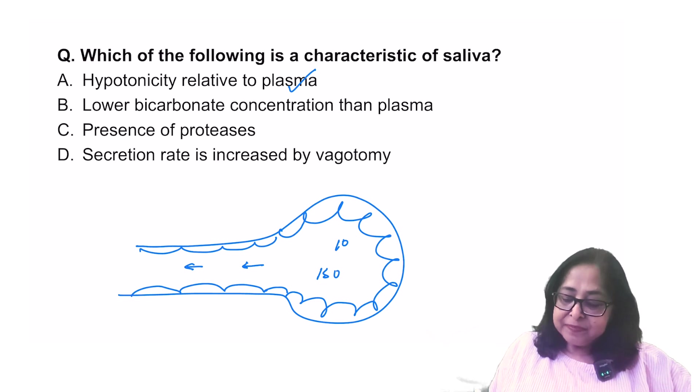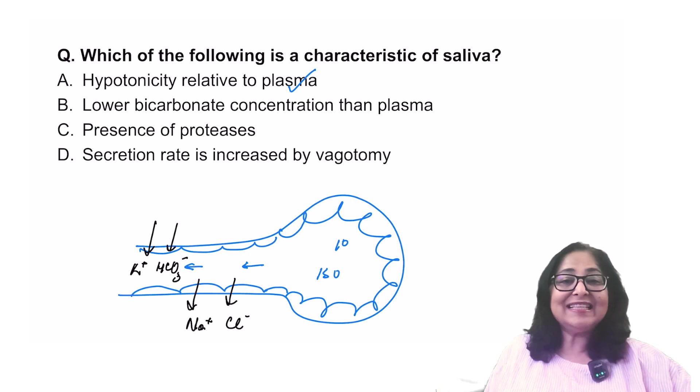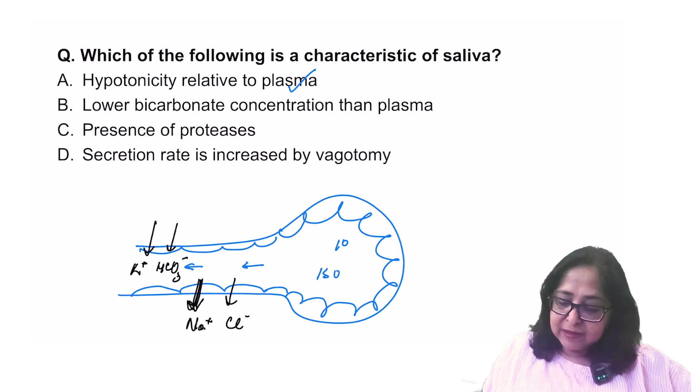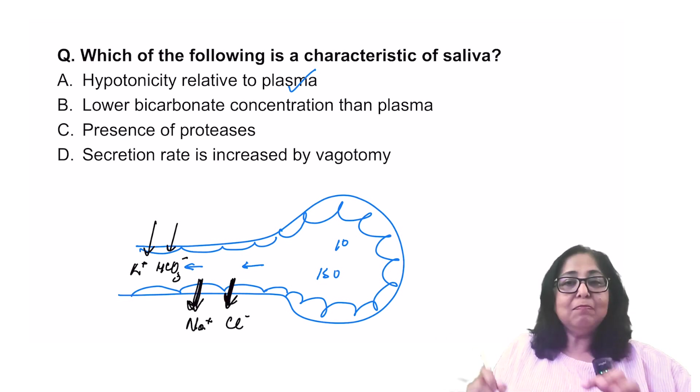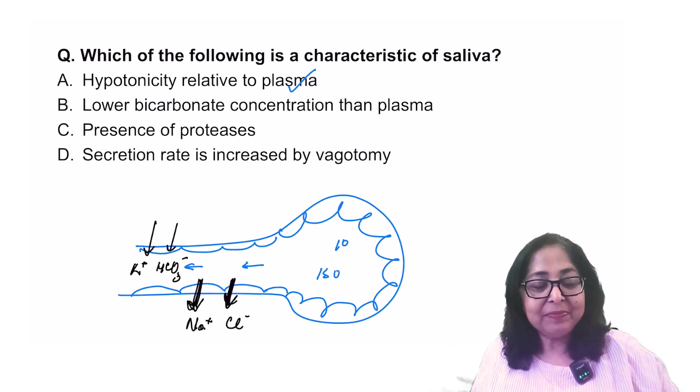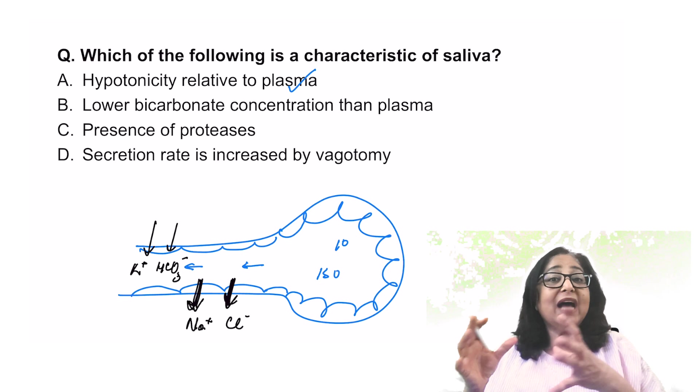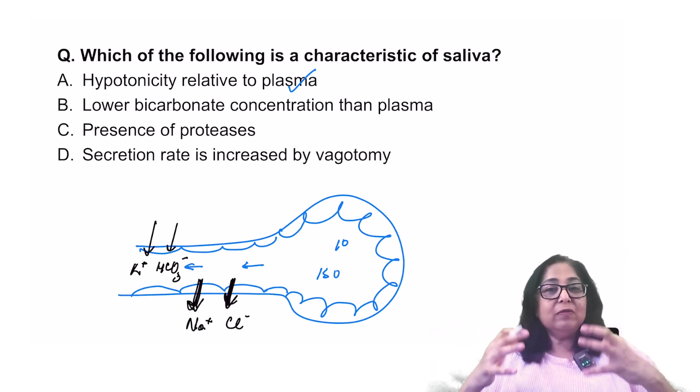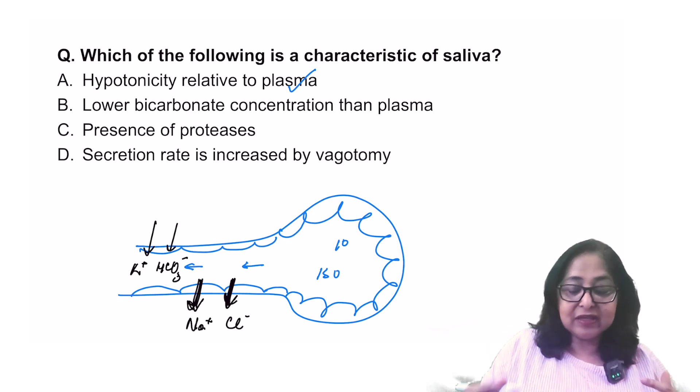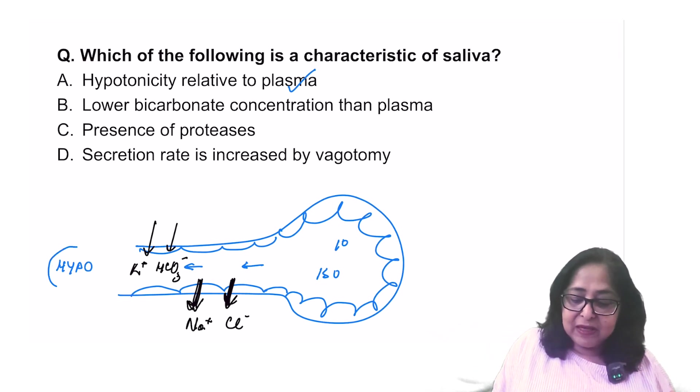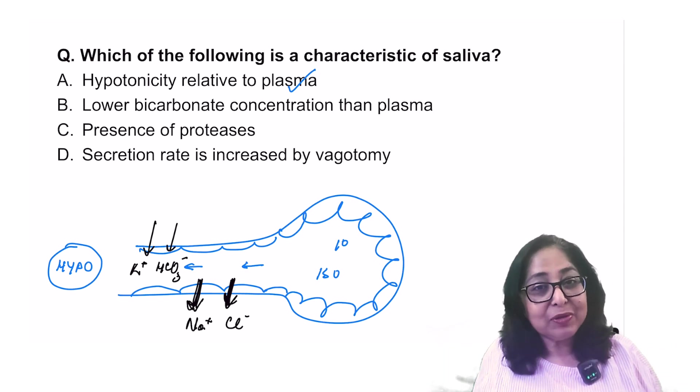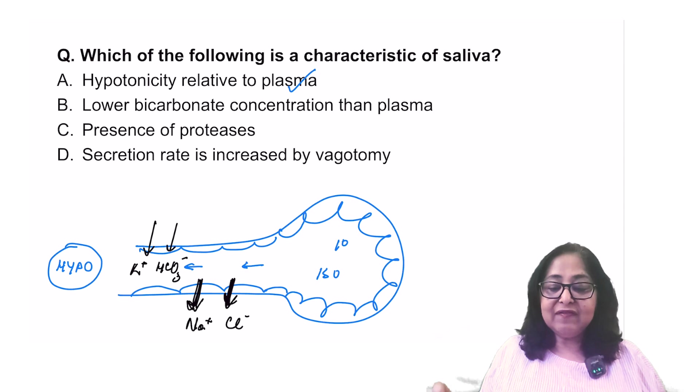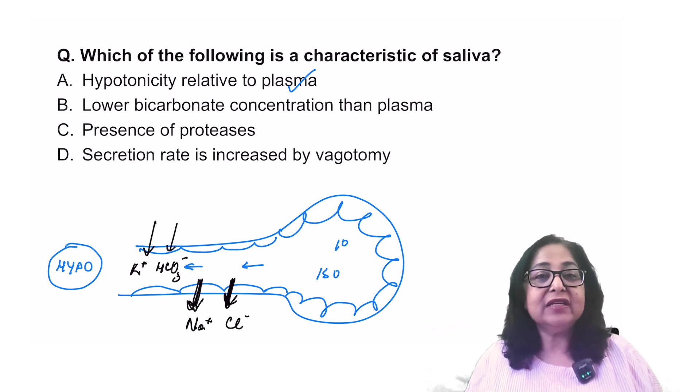And what is this modification? Sodium and chloride are reabsorbed and potassium and bicarbonate are secreted. But please remember, the absorption of sodium and chloride is much more than the secretion of potassium and bicarbonate. So what will happen to saliva? Finally, saliva which was isotonic to begin with, now because there is more absorption of electrolytes as compared to the secretion, the saliva will always be hypotonic. So whether it is a stimulated gland or an unstimulated gland, saliva is always hypotonic relative to plasma.